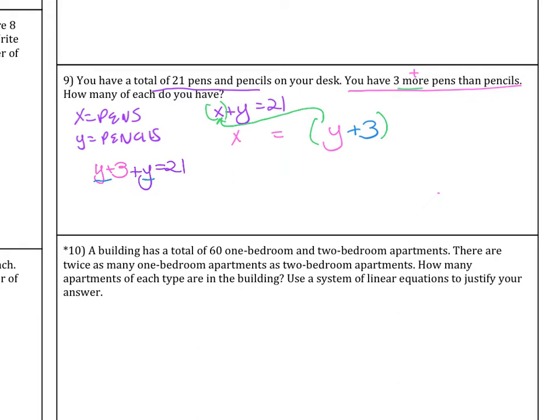Now we solve. This becomes 2y plus 3 equals 21. Then I continue to solve. So I subtract 3 from both sides. So I get 2y equals 18 divided by 2. So y equals 9.